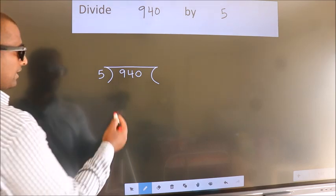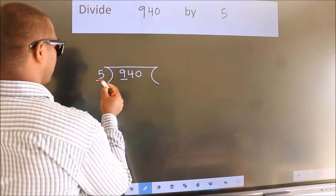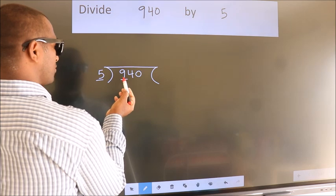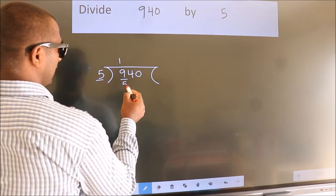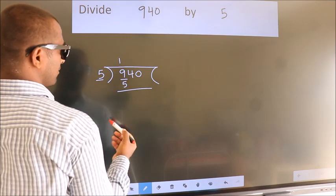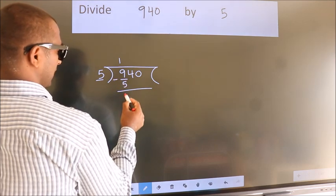Next. Here we have 9. Here 5. A number close to 9 in 5 table is 5 once 5. Now we should subtract. We get 4.